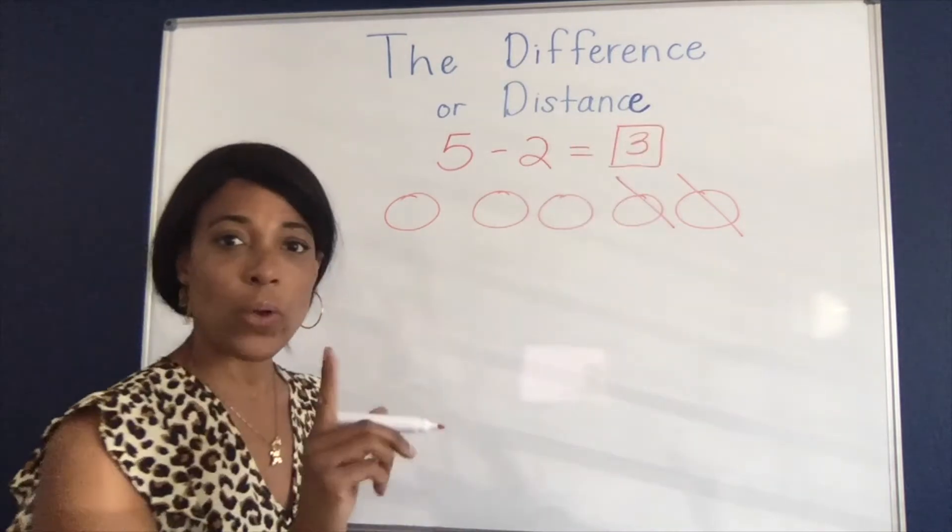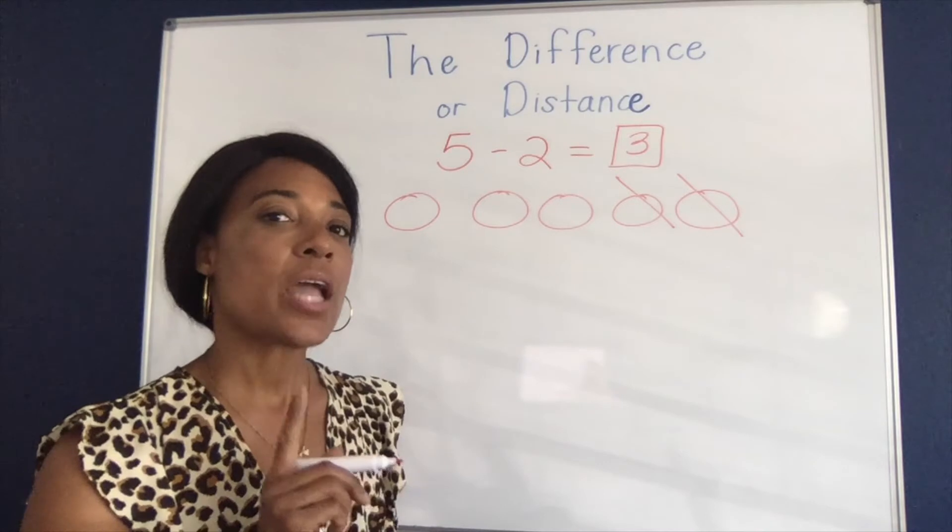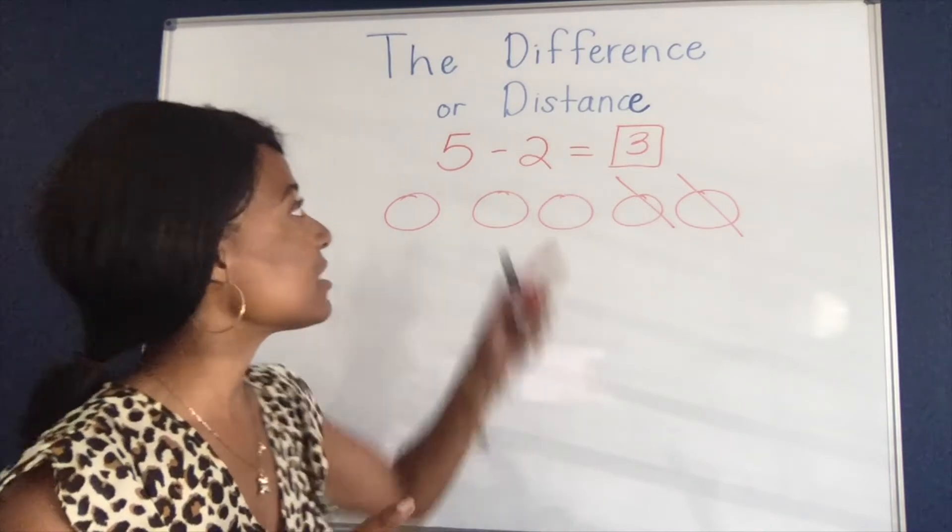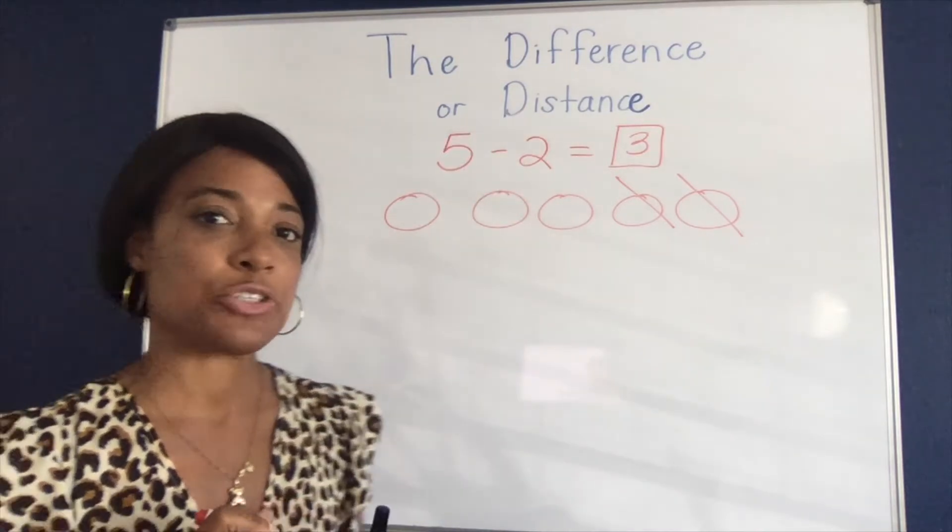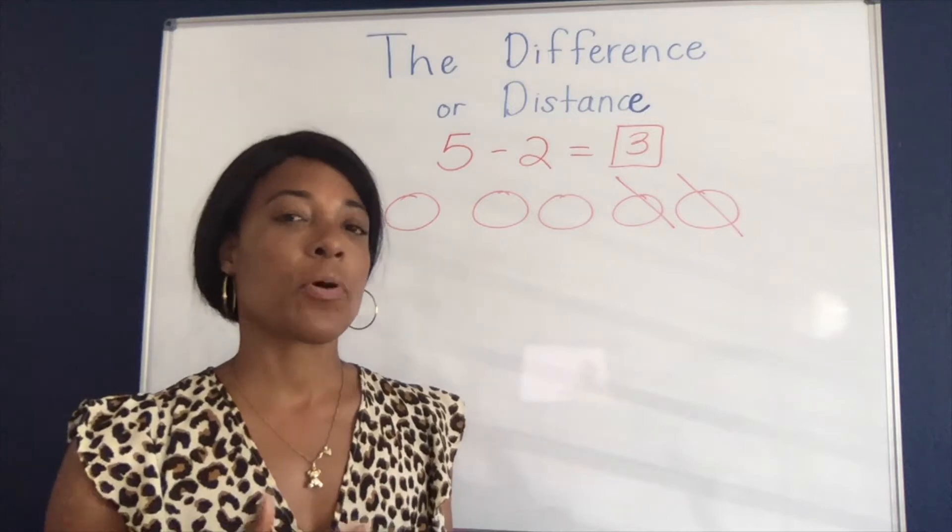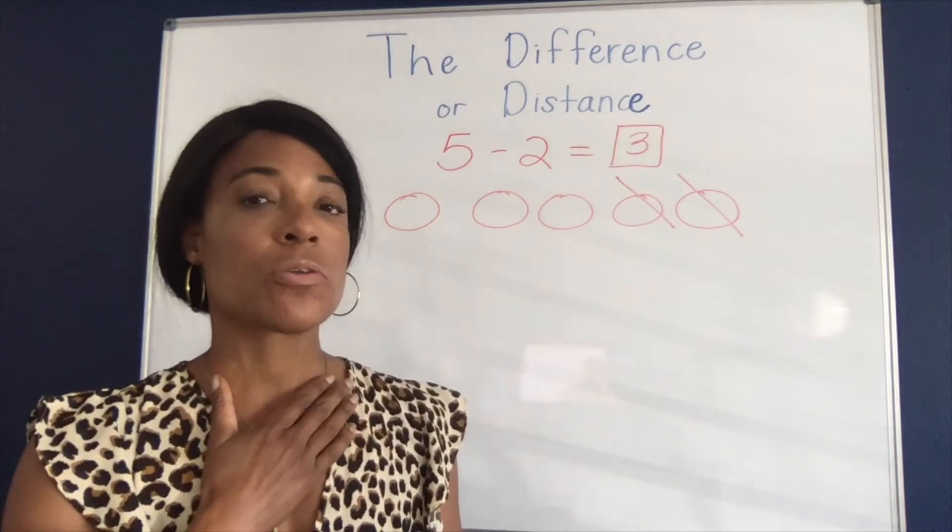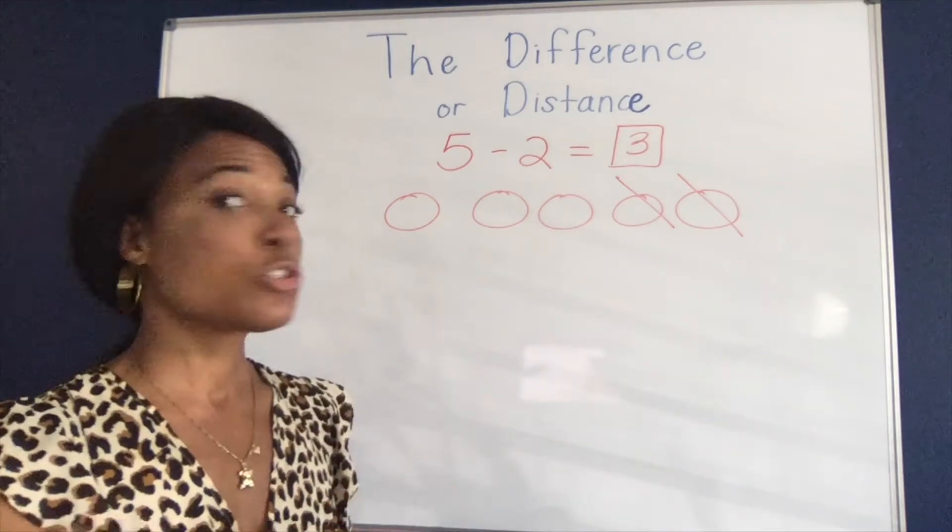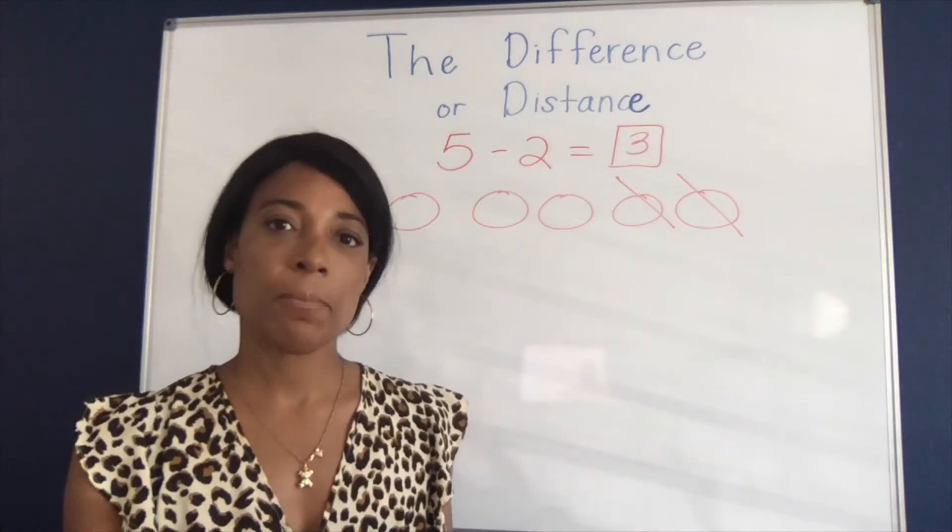But that's only one way to think about subtraction. Another way is to think about the difference or the distance between two numbers. So for example, if I have five water bottles and somebody else has two water bottles, what's the difference between our numbers?